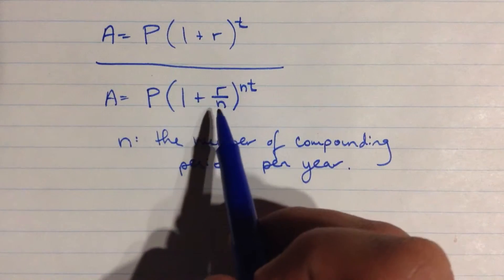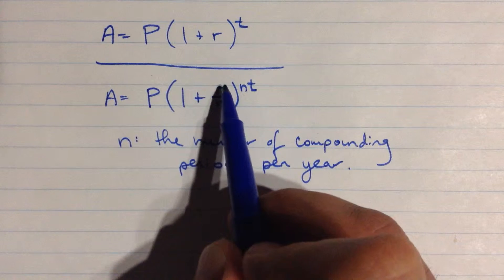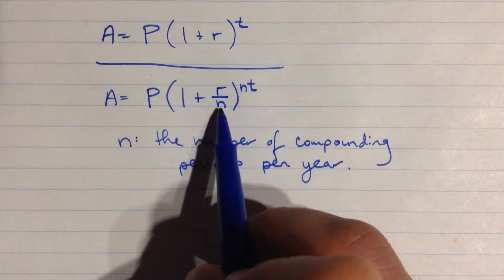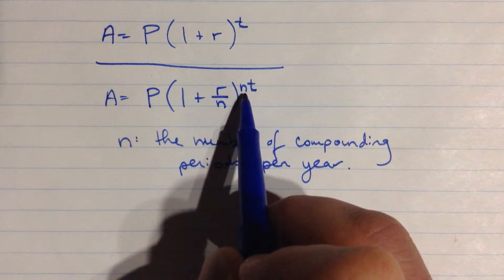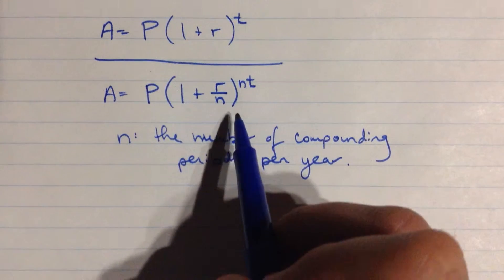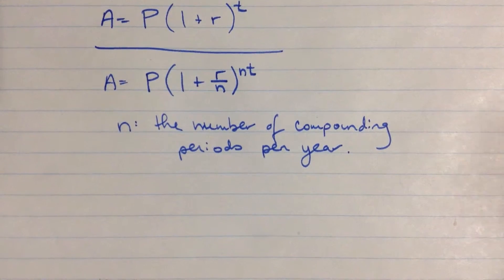And so this small change then is to divide the rate as a decimal by the number of times the rate is used in a year, and then the exponent is multiplied by that number of times, so every year it happens that many times. So let's do an example to see how this works.